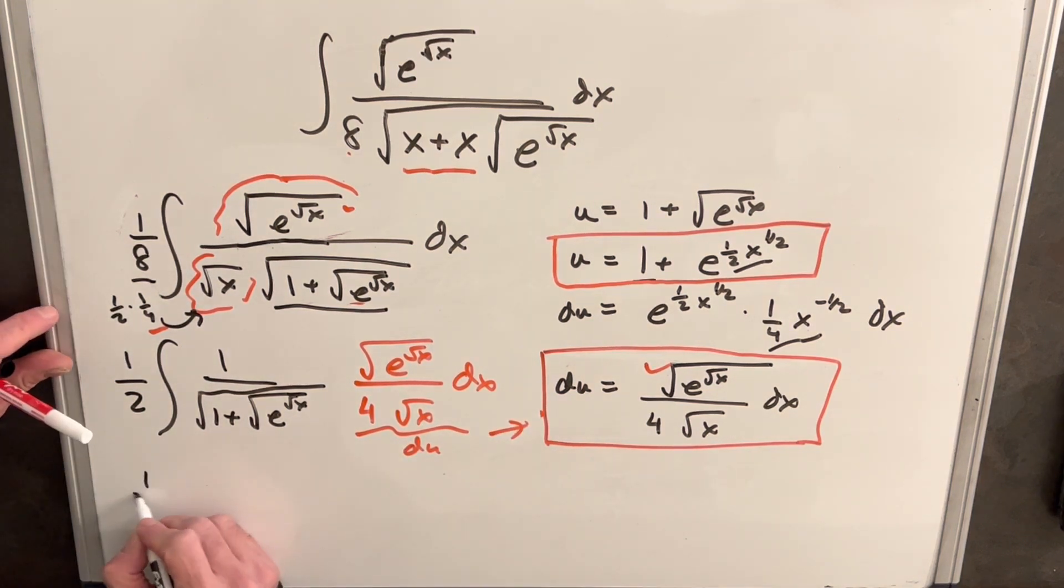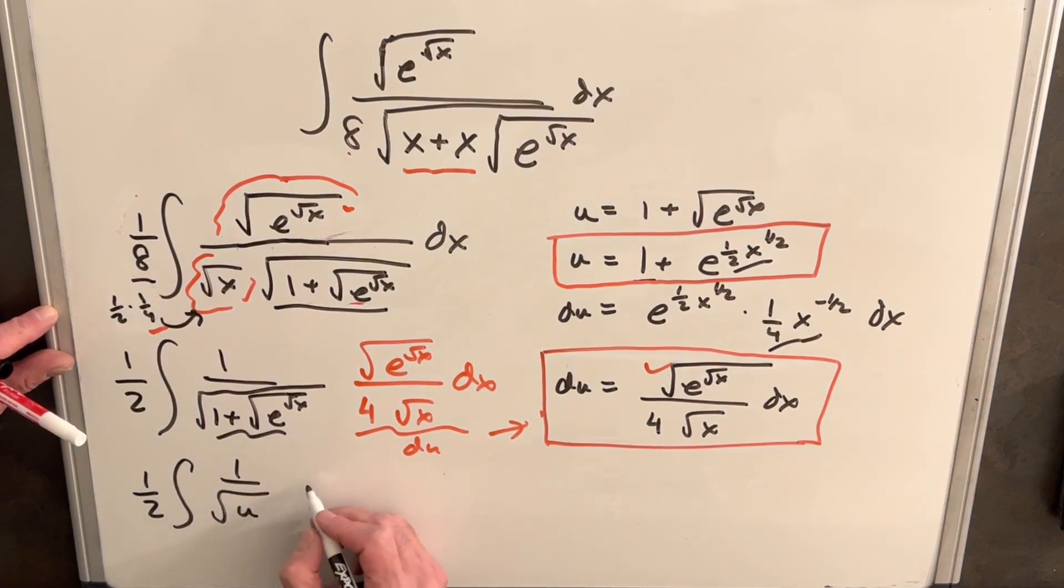And now I'm ready to make our substitution. We're going to have 1 half, 1 over, this is our u, so we're going to have square root of u, and then all that's du, so we're just going to du.